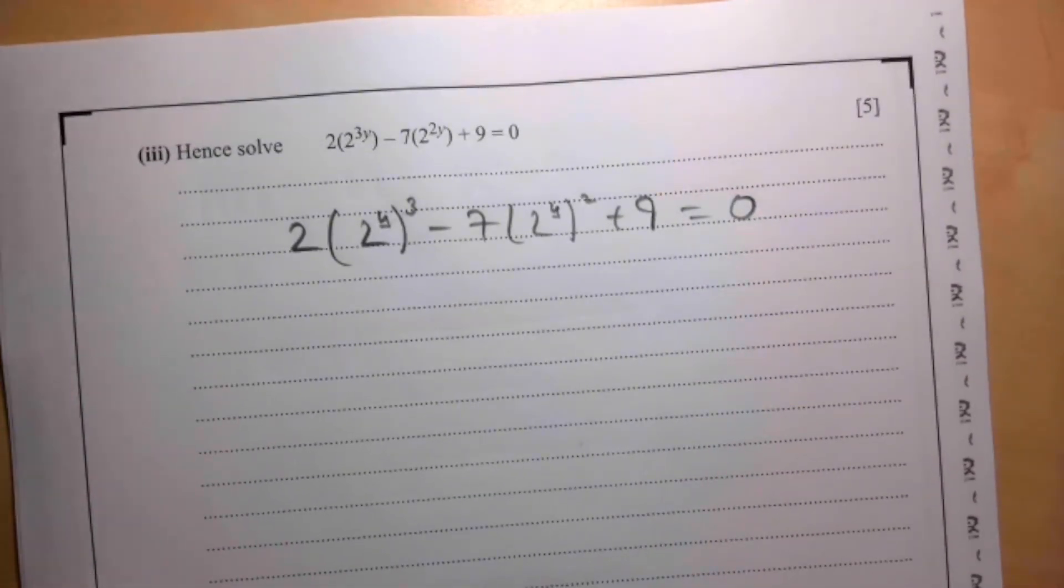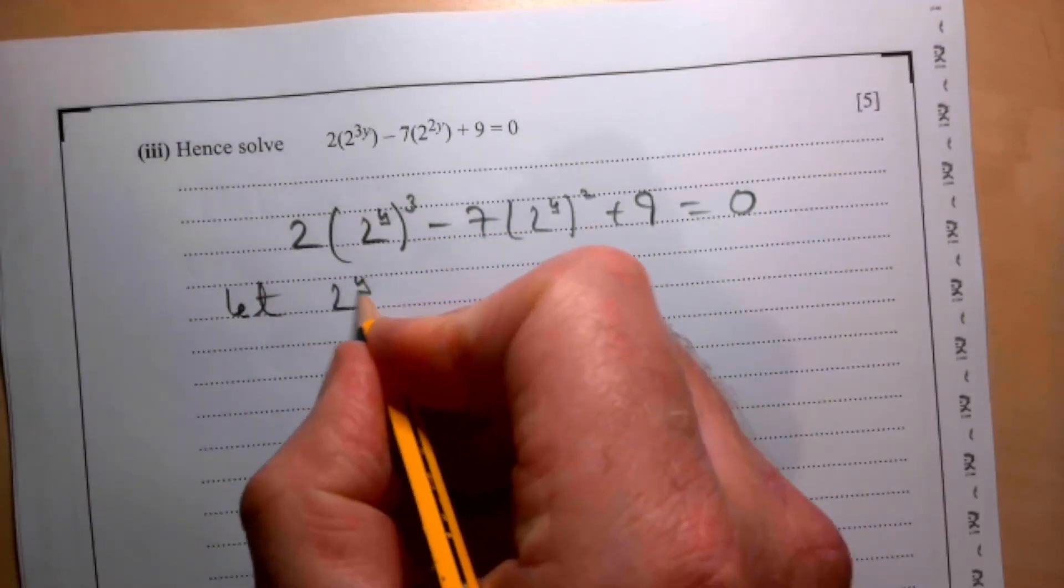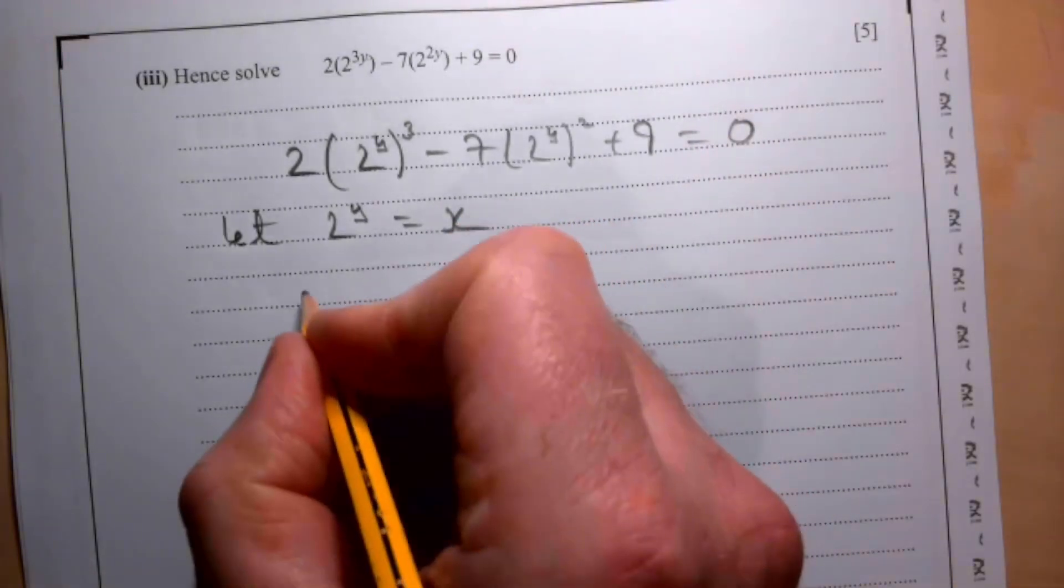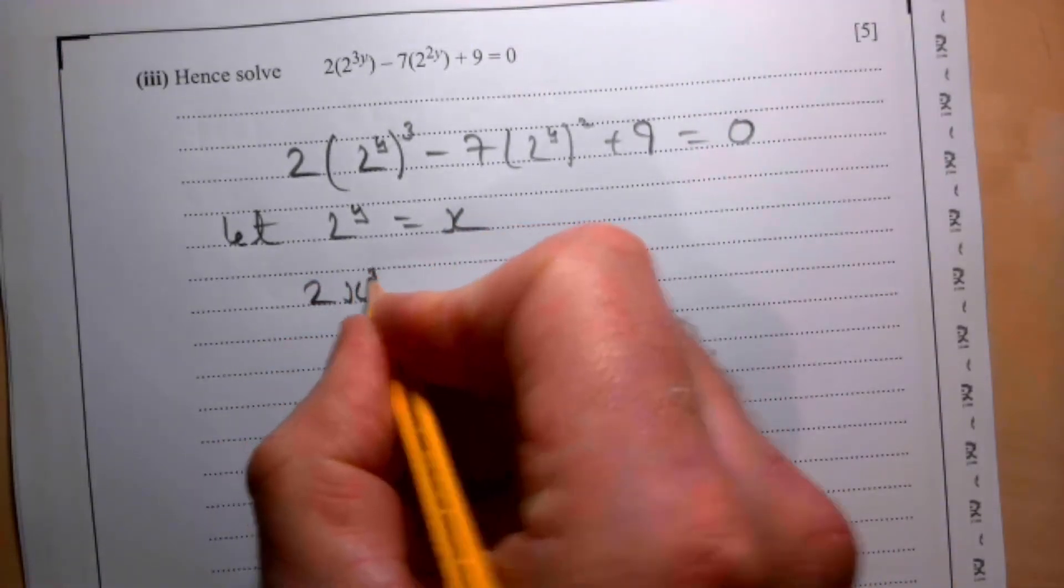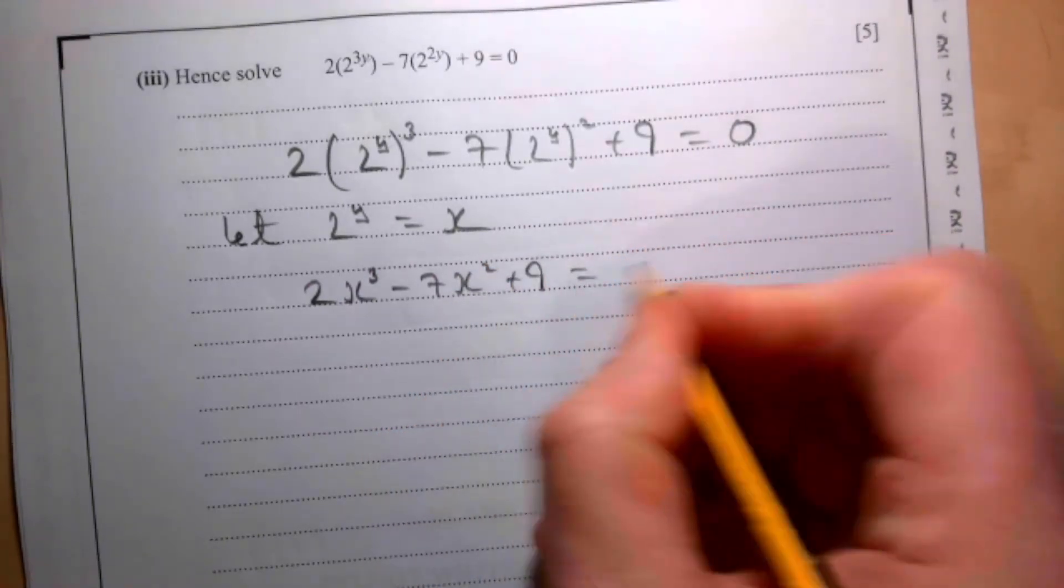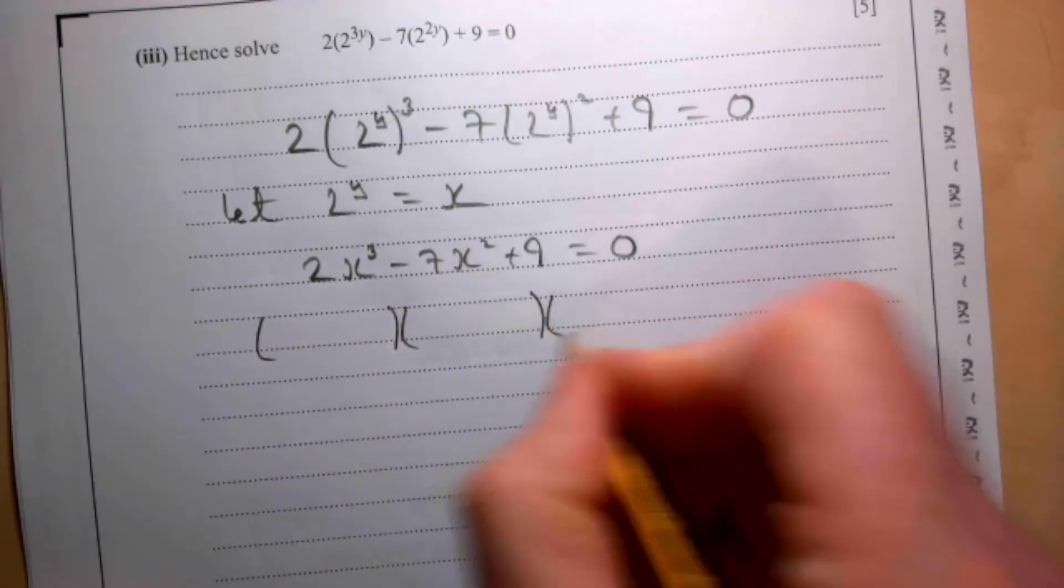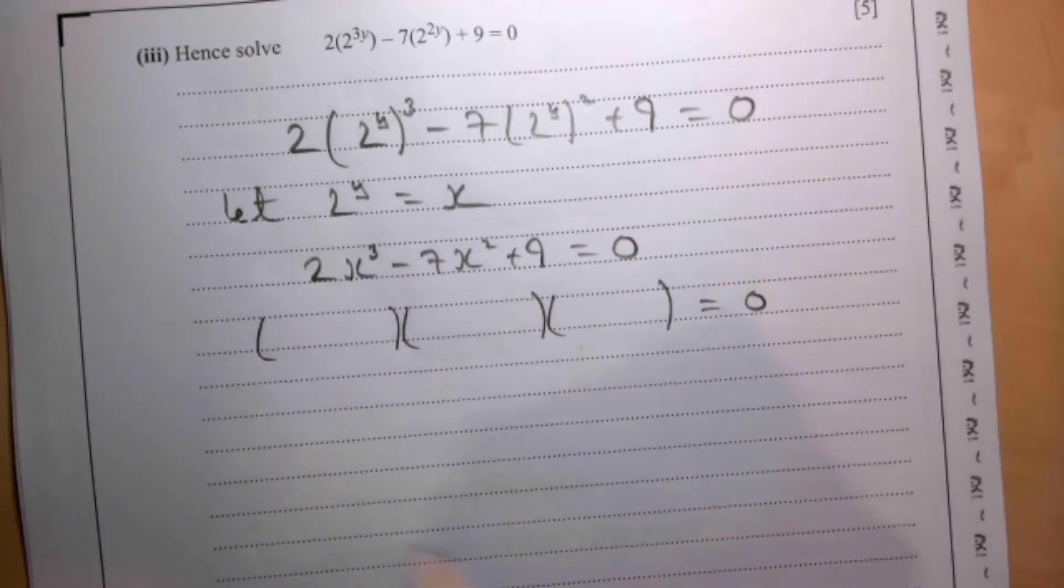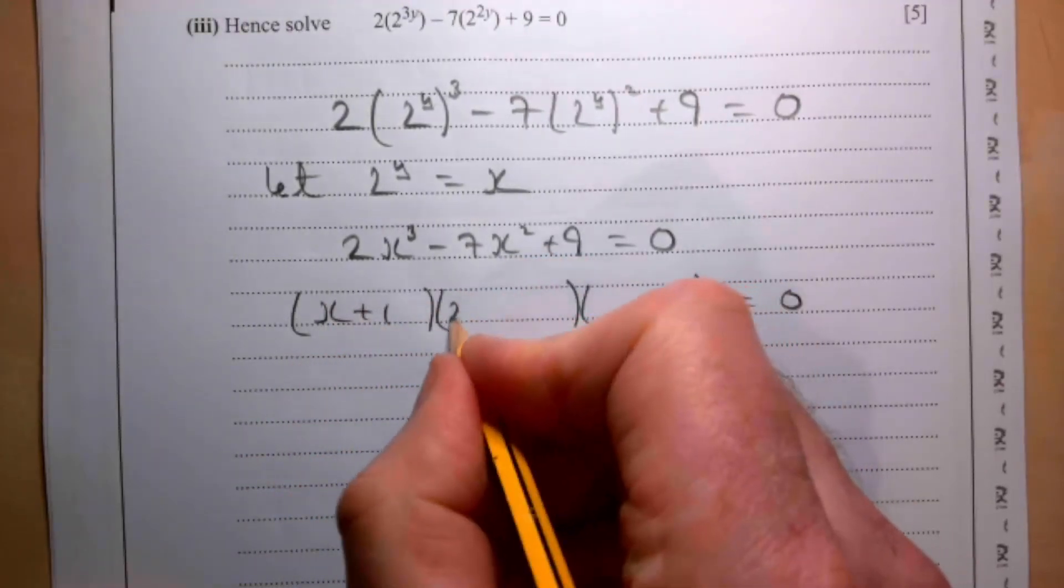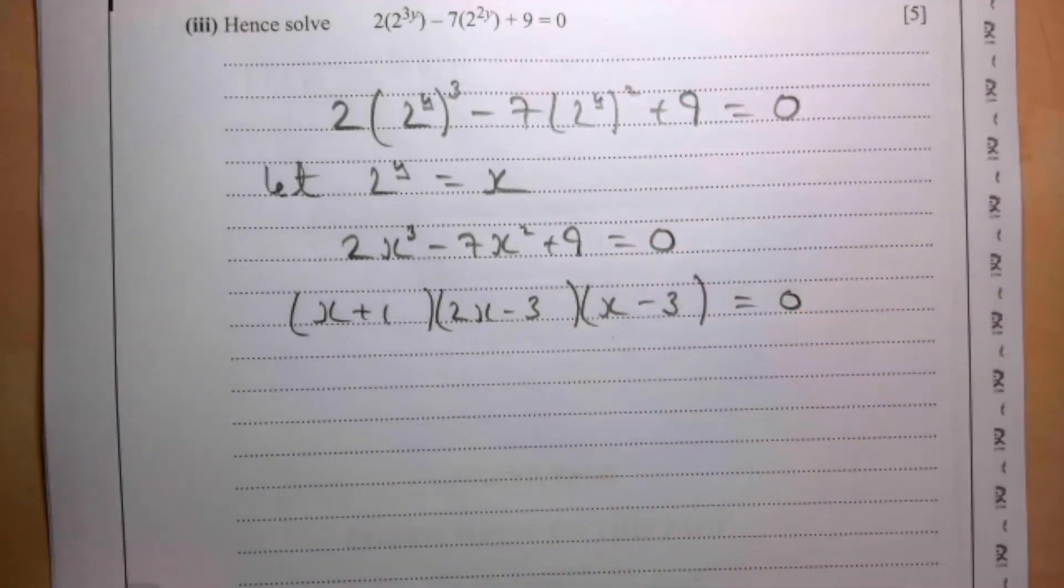If I let 2^y equal x, then I have 2x³ - 7x² + 9 = 0. And in the previous question, we just factorized that. So we know those factors are going to be (x + 1)(2x - 3)(x - 3).